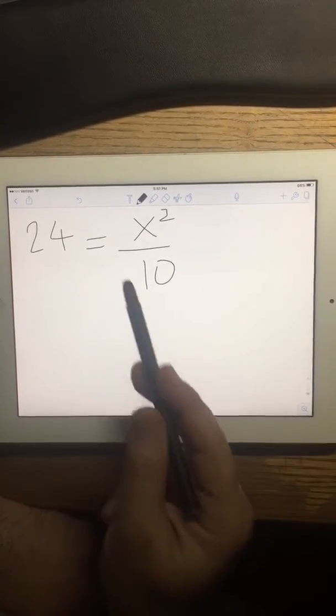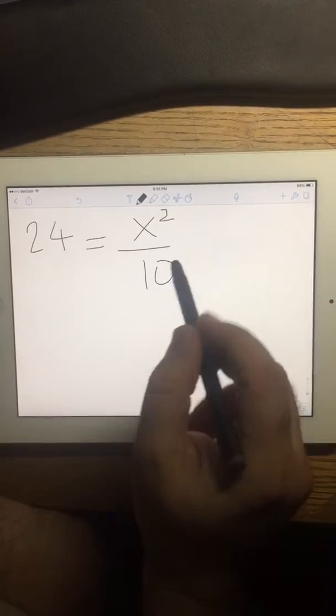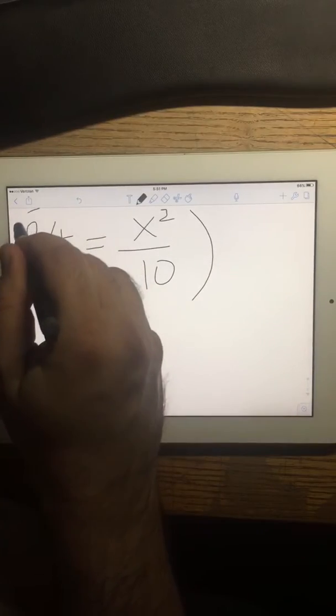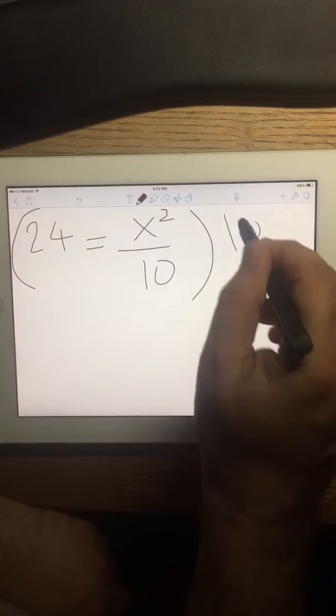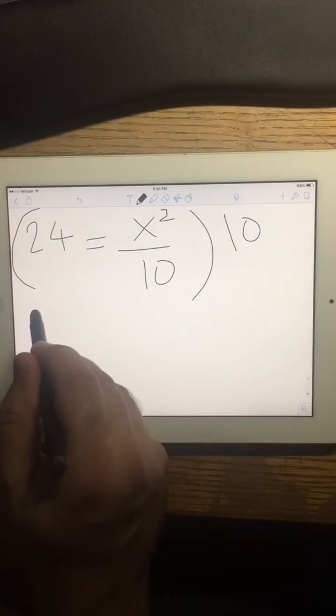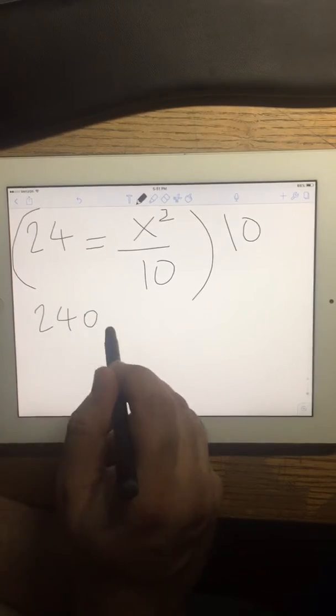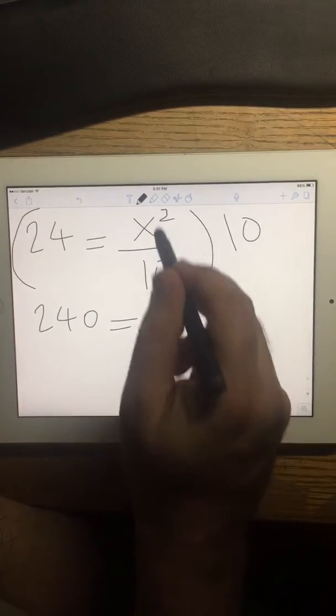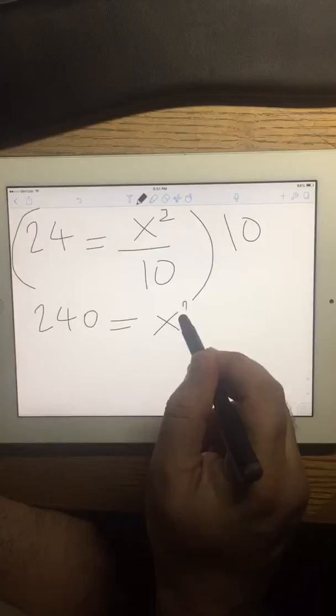Okay, so to do this problem, first I multiply the whole equation by 10, so that gives me 240 equals, and 10 and 10 cancels, and I got x squared.